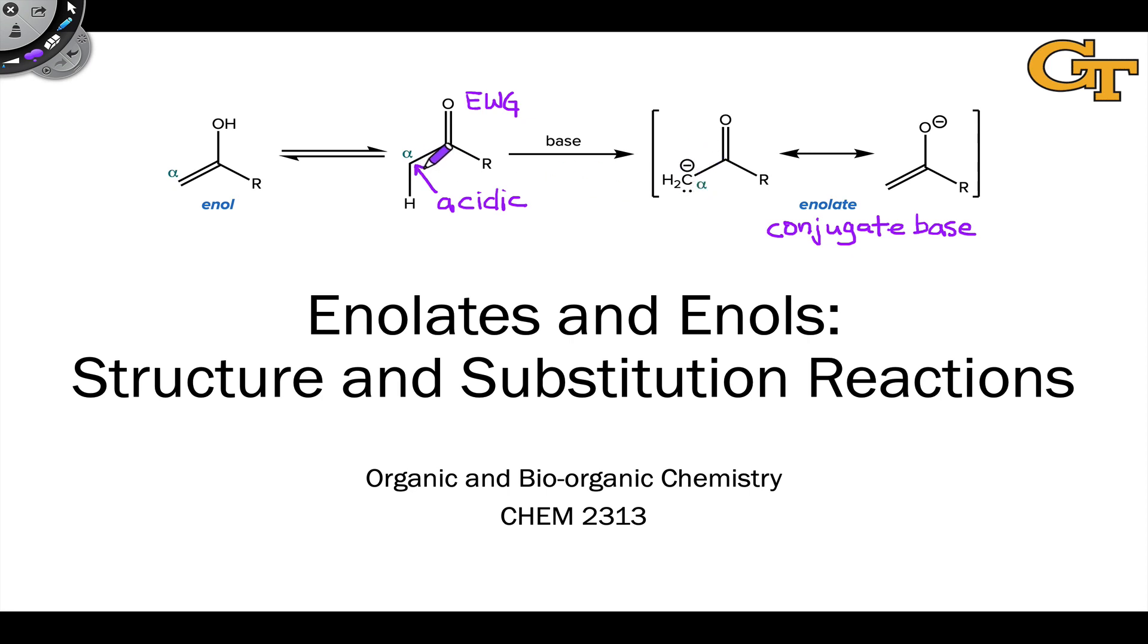The acidity of the alpha position can also result in an isomerization process that places a carbon-carbon double bond in the structure and a hydroxyl group. This structure, which is called an enol, has the same molecular formula as the original carbonyl compound or keto form, but a hydrogen has changed positions.